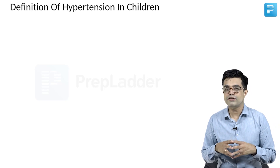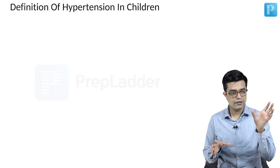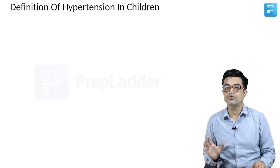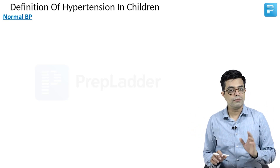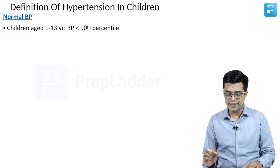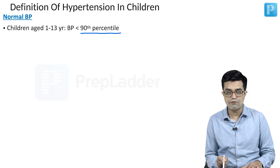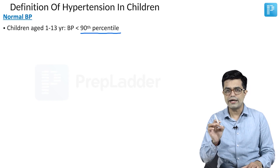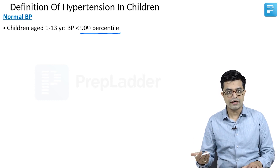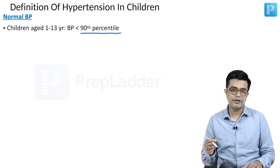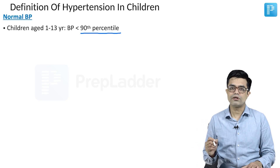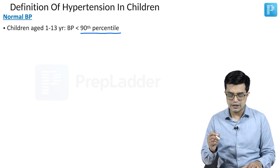Hypertension-wise, the definition is of two parts. One is hypertension defined in the 1 to 13 year age group, and second is above 13 years of age. What is normal BP? For a child aged 1 to 13 years, when you plot on a chart, if the BP is less than the 90th percentile for age, gender, and height, we say the child is having a normal blood pressure.